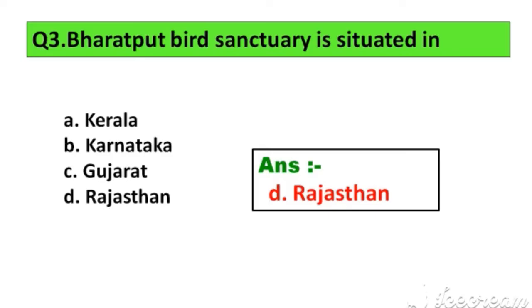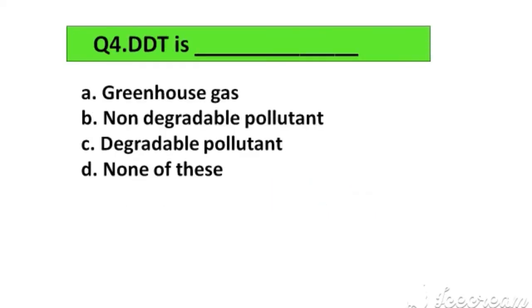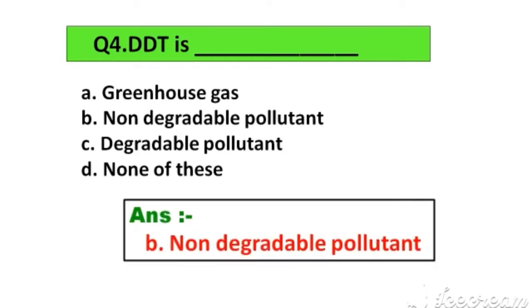Question number 4. DDT is: Option A. Greenhouse gas, B. Non-degradable pollutant, C. Degradable pollutant, D. None of these. The right answer is Option B. Non-degradable pollutant.